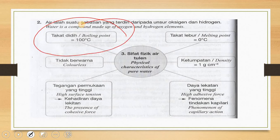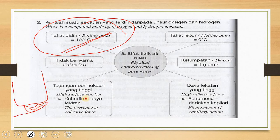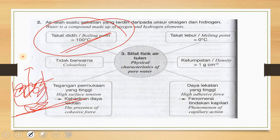Water will boil at a temperature of 100 degrees Celsius. For example, if you have a pot filled with water and you put it on top of a stove with fire, when the water starts to bubble up, it is boiling at 100 degrees Celsius.